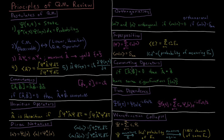If two operators commute, they share the same set of eigenfunctions. For example, position and momentum do not commute, so they do not share the same eigenfunctions, and this leads directly to the fact that you cannot measure both simultaneously to arbitrary precision or accuracy.